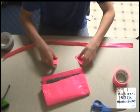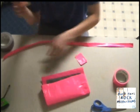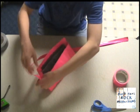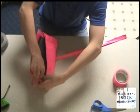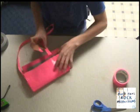To attach the straps, get a three to four inch piece of duct tape and attach the strap to the inside of the purse. Get another piece of duct tape and do the same on the other side.